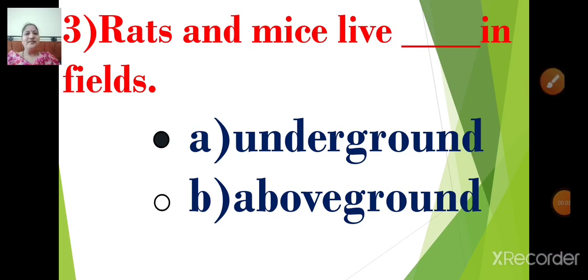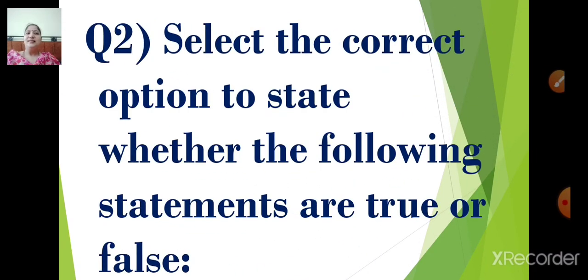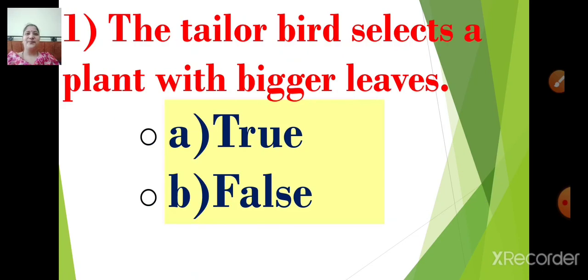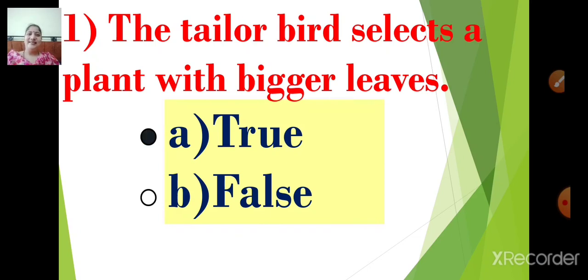Now let's proceed with question 2: Select the correct option to state whether the following statements are true or false. Statement 1: The tailor bird selects a plant with bigger leaves. Options are A: True, B: False. The correct answer is option A — true. The tailor bird selects a plant with bigger leaves is a true statement.